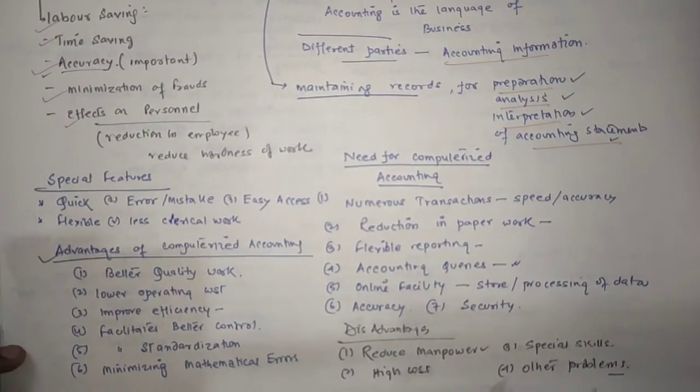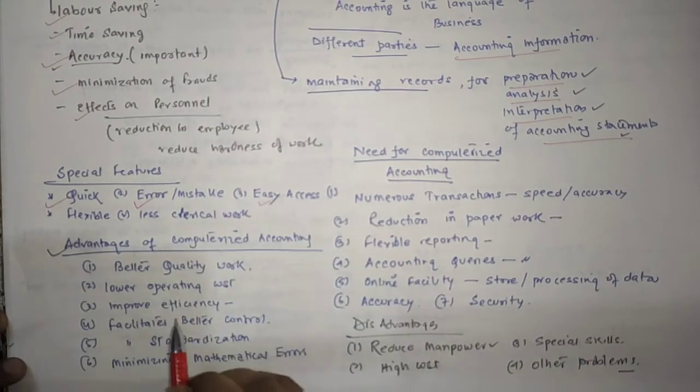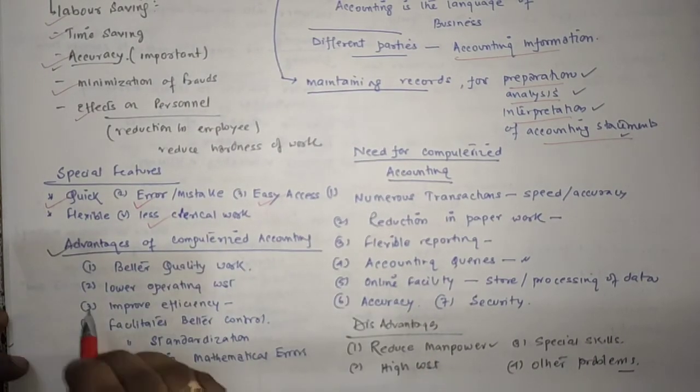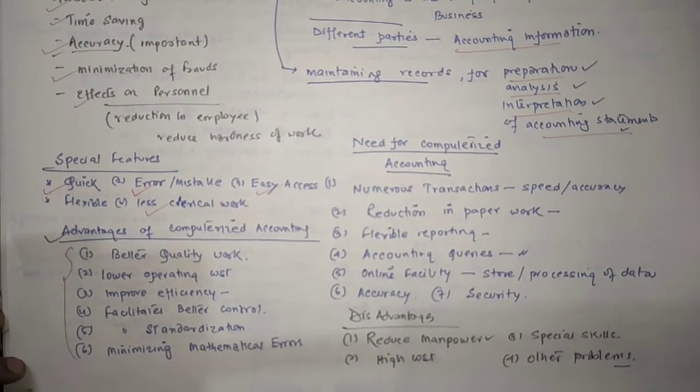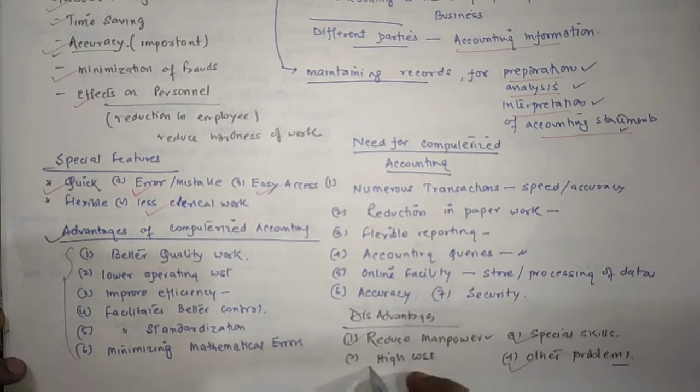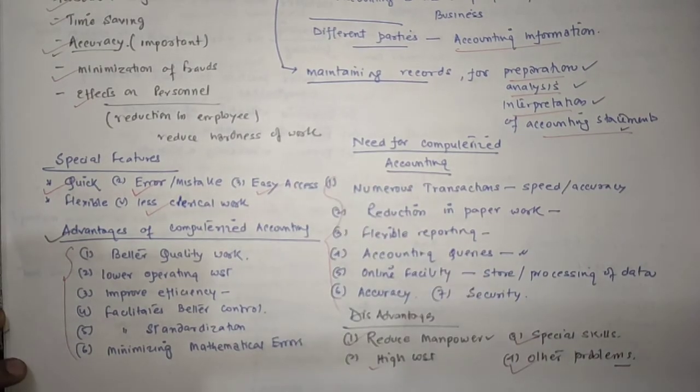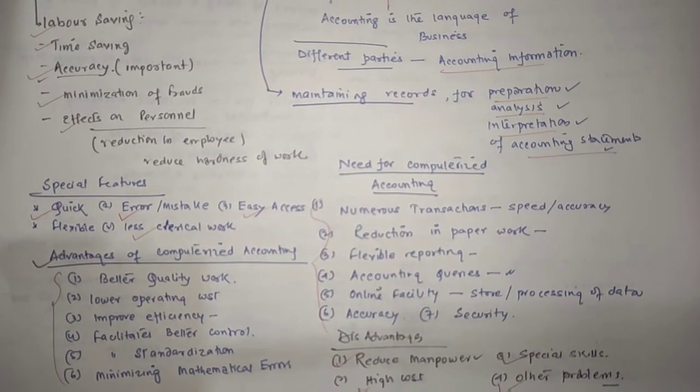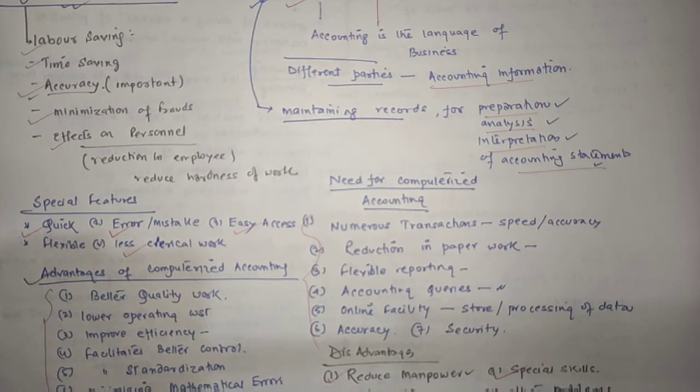Then we came to the special features: it is quick, it is error free, it is easily accessible, and less clerical work. We got the advantages of computerized accounting system, the disadvantages of computerized accounting system, and the needs of computerized accounting system. Hope you like my video. Kindly subscribe to my channel. Tomorrow I will be back with another video. Thank you for watching.